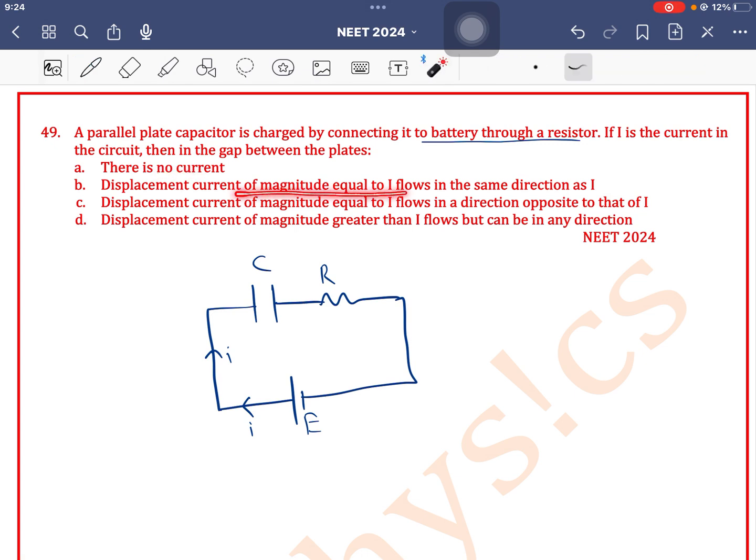Displacement current of magnitude equal to I flows in the same direction as I. Displacement current of magnitude equal to I flows in a direction opposite to that of I. Displacement current of magnitude greater than I flows but can be in any direction.